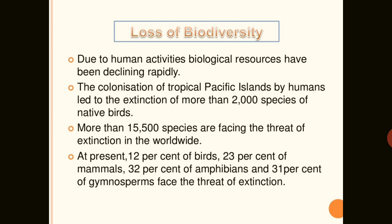There is a natural process of extinction found in our universe. With the change in environmental conditions, some species disappear and others which are more adaptive take their places. The loss of species that occurred in the geological past happened at a very slow rate. This process is known as natural extinction.